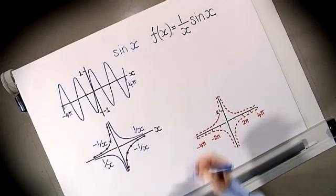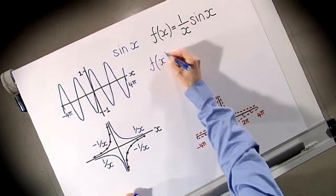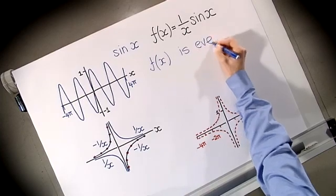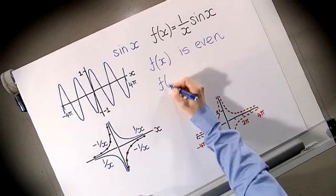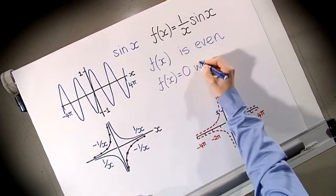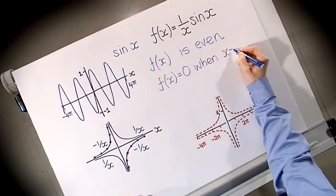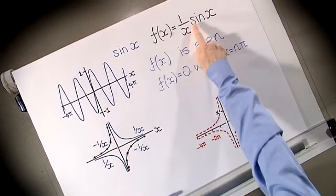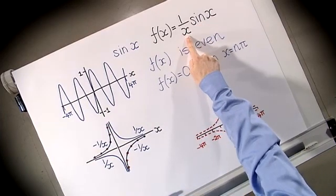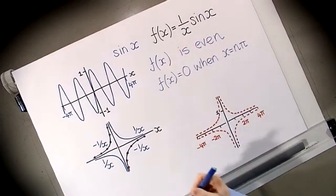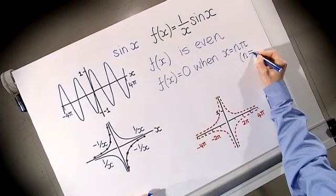Again, sin(x) is zero when x is an integer multiple of π, so f(x) equals zero when x is an integer multiple of π. But this function is more subtle than the last one because it's undefined when x = 0. At x = 0 we'd have sin(0)/0 = 0/0, which doesn't make sense. So we have to disallow n = 0, since the function is not defined at x = 0.